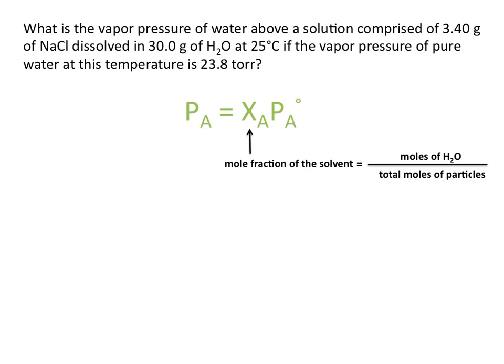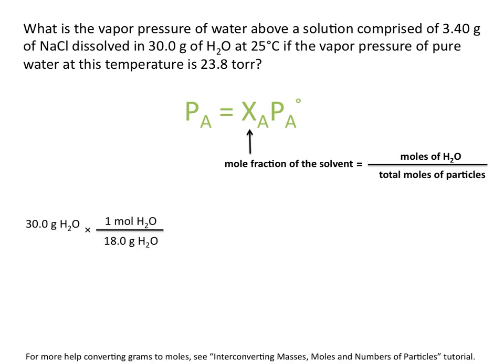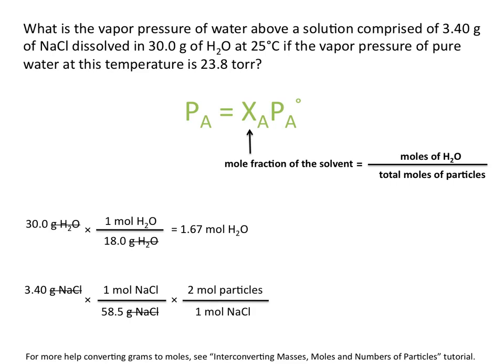We're going to count each mole of NaCl as two moles of particles because it dissolves to give us two ions. To calculate the number of moles of H₂O, we take the number of grams of H₂O given and use the molar mass of H₂O, giving us 1.67 moles of H₂O. To calculate moles of NaCl, we start with 3.4 grams of NaCl, convert to moles using the molar mass, and then take into consideration that each mole of NaCl ionizes to form two moles of particles, giving us 0.166 moles of particles.